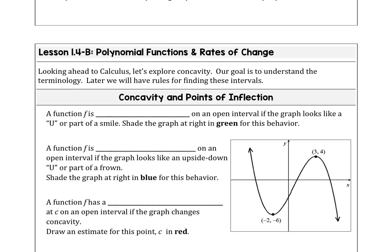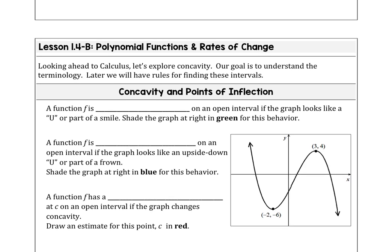We talked about that in the first lesson. A function f is said to be concave up on an open interval if the graph looks like a U or part of a smile. A function f is concave down on an interval if the graph looks like an upside-down U or part of a frown. We want to shade the graph in green where we are concave up.